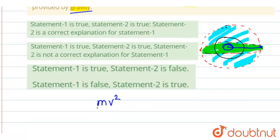And the necessary centripetal force, that is mv² upon r, if this is r, it should be balanced by the gravitational force, that is g small m into capital M divided by r², where small m is the mass of this satellite and capital M is the mass of the earth. So this statement is also true.